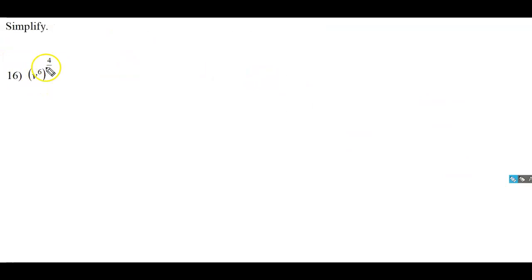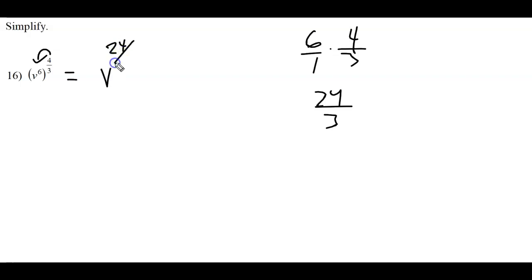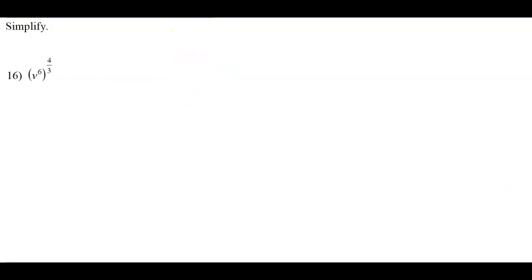Now for rational exponents. When a power is raised to a power, distribute — multiply the exponents. For example, 4/3 times 6 is 24/3, which reduces to 8. So we get V to the 8th power.